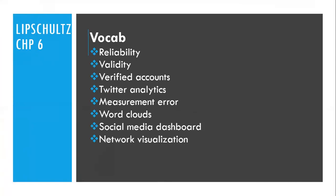Here are some vocab terms for chapter six: reliability, validity — which is the same as in research methods — verified accounts, Twitter analytics — which you now have experience in — measurement error, word cloud, social media dashboard, and network visualization.